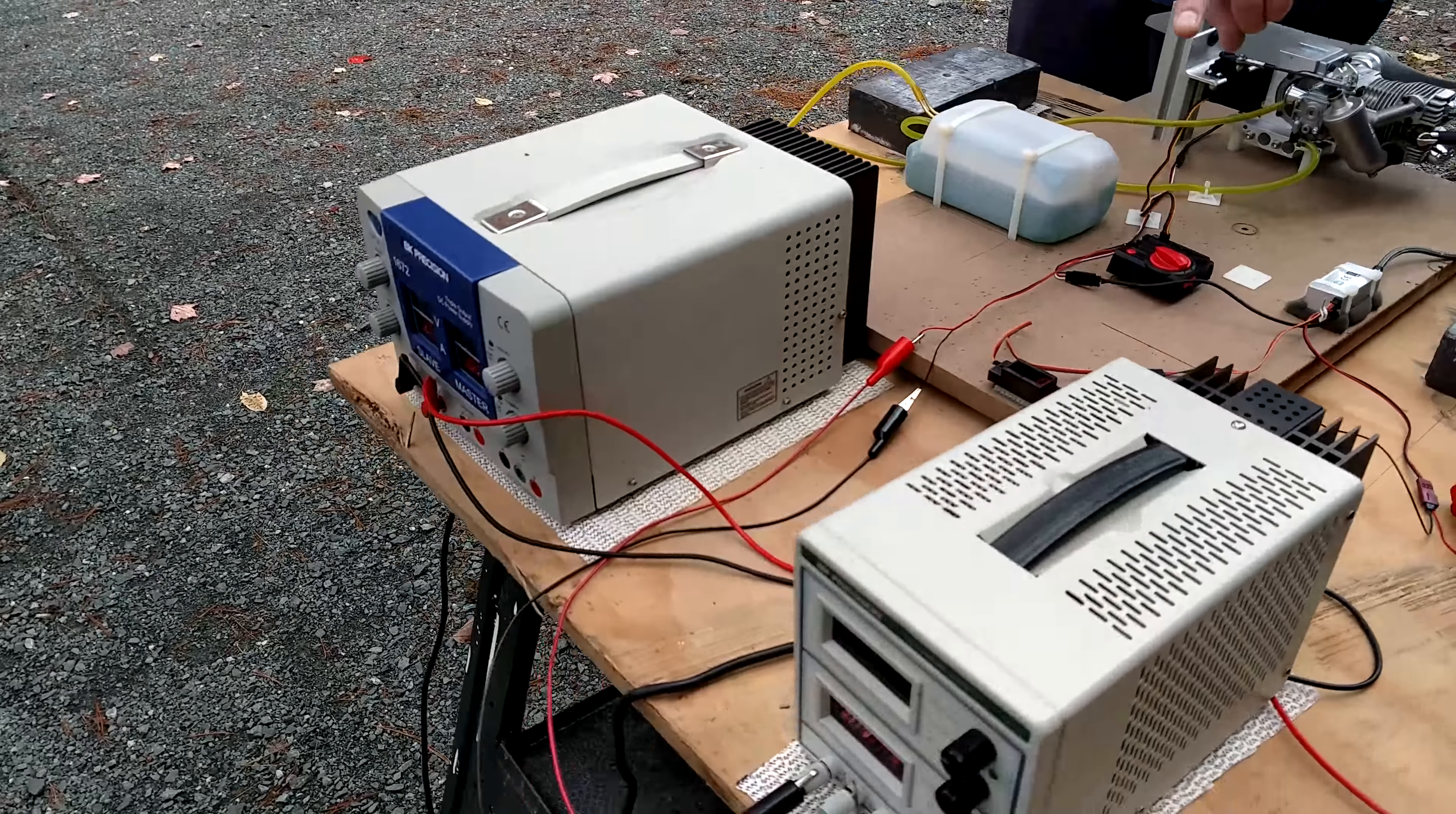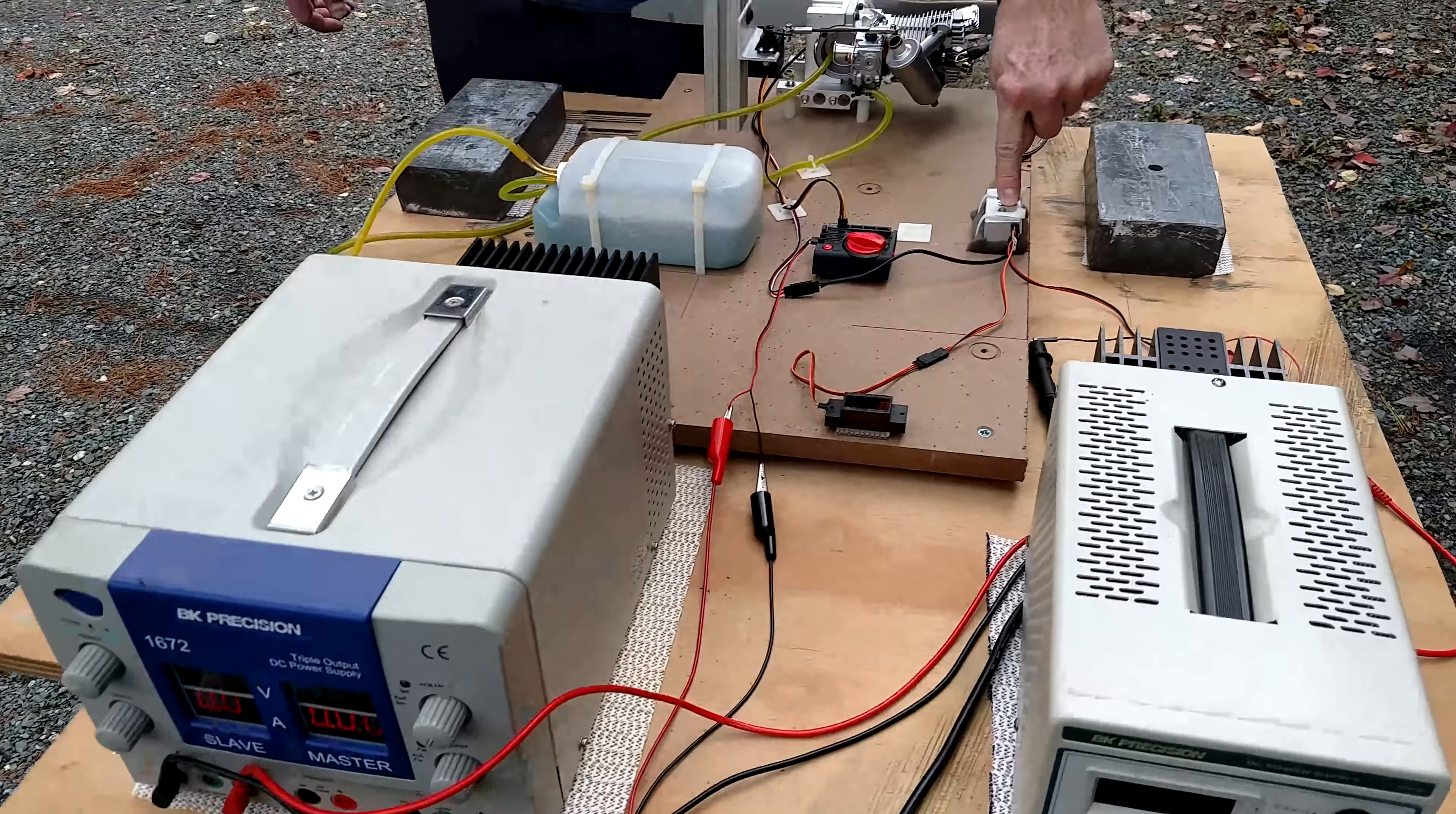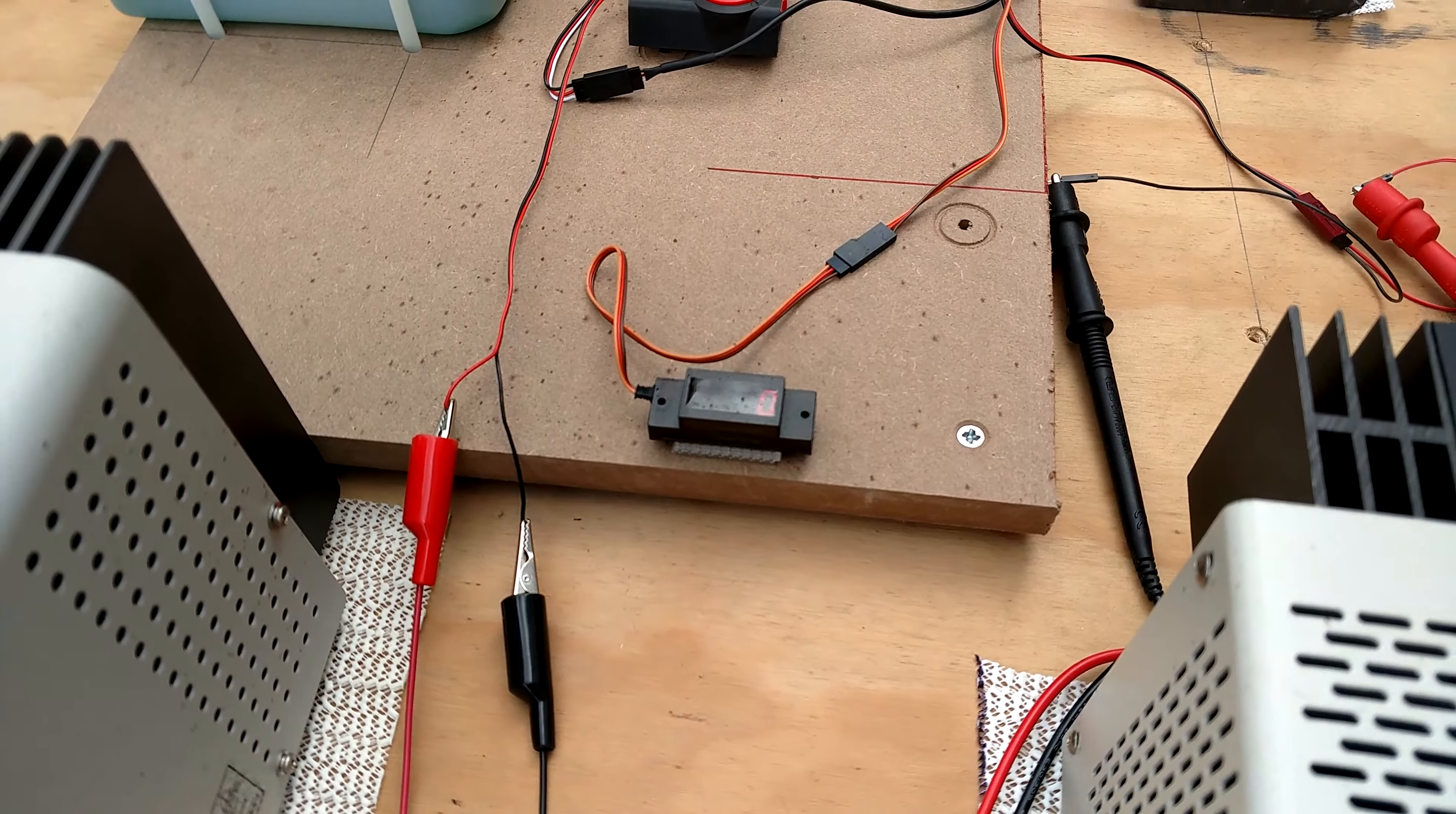The servo here controls the throttle, the fuel is obvious. The two power supplies you see provide power to the servo, which is controlled by a simple pulse width modulation control for testing, and the other power supply provides electrical input for the ignition system because there's no magneto. Finally, there's an RPM gauge that reads the RPM at one-tenth of actual.